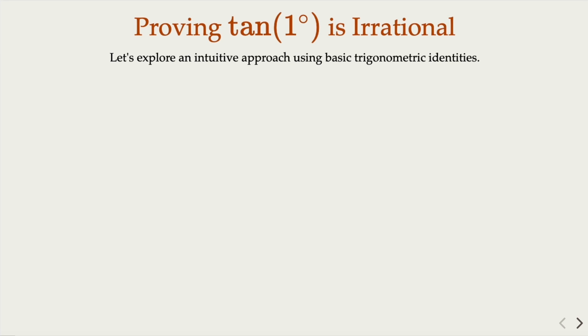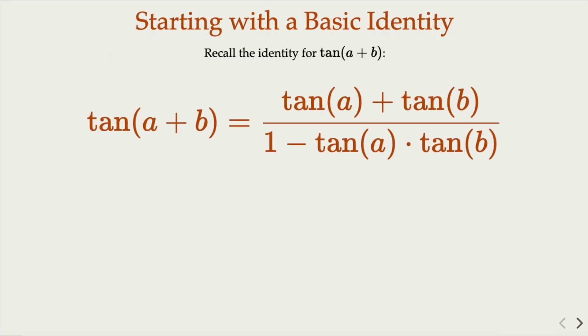Now we're going to resort to proof by contradiction. The magic formula, that is the trig identity we're looking for, is the sum of tangent. We know that tangent is going to equal this ratio here. On the top is the sum, on the bottom is one minus the product of tangent.